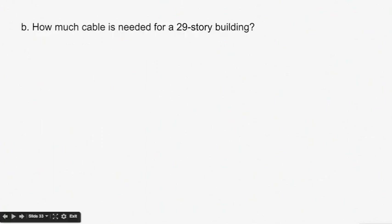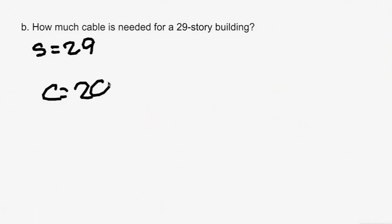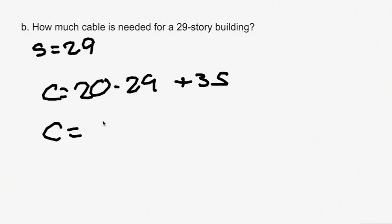Part B: how much cable is needed for a 29-story building? S equals 29, so plug this into the equation: C equals 20 times 29 plus 35. That gives C equals 615 feet. So you need 615 feet of cable for a 29-story building.